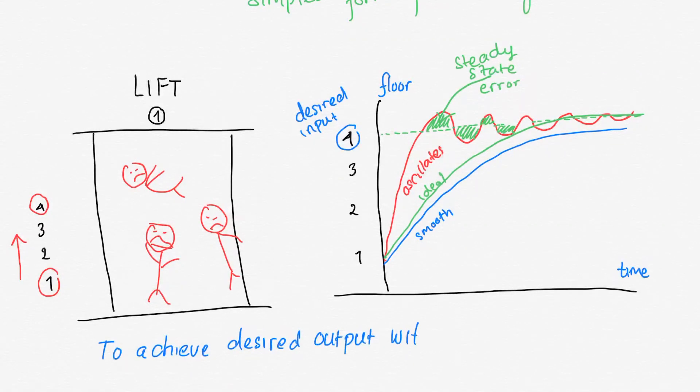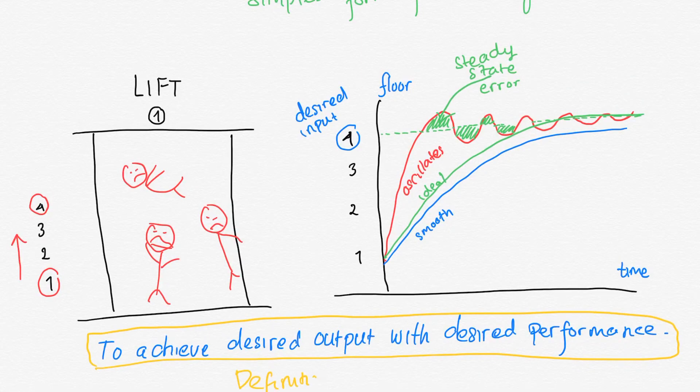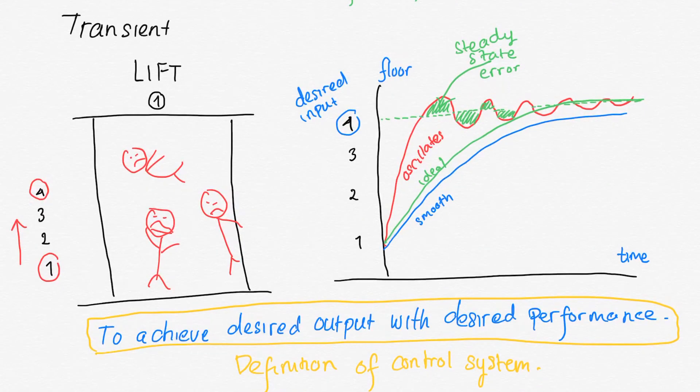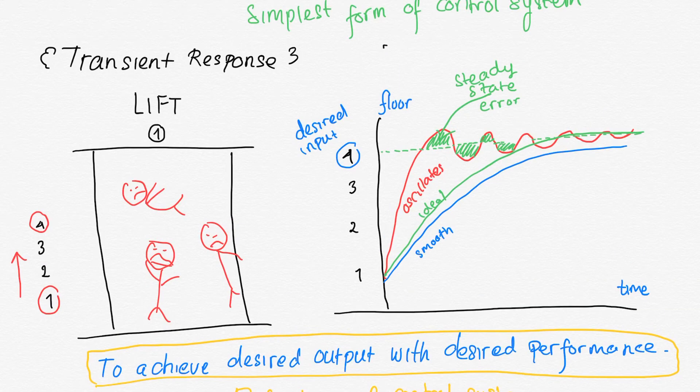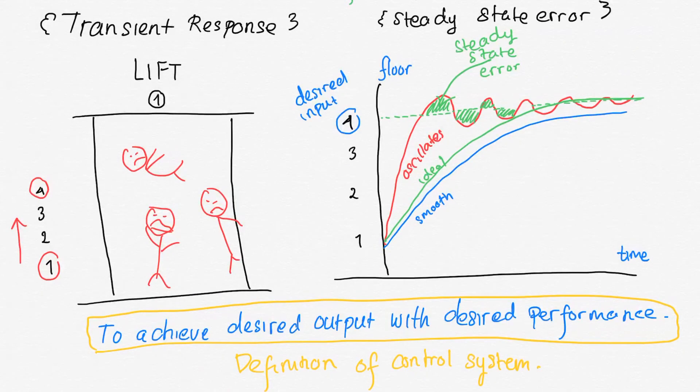Do you remember our definition of control system? To achieve desired output given specified input and desired performance. Alright, so we already talked about transient response - how the system behaves in a transition from one state to another state. In our case, from the first floor to the fourth floor. We also talked about steady state error - the difference between the desired output and actual output in steady state condition. There is one more thing, it's called stability. We will not talk about transient response and steady state error further if the system is not stable. So later on, we will talk about system stability first before talking about transient response and steady state error.